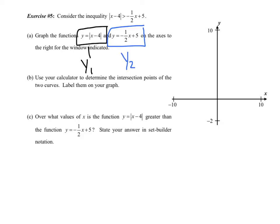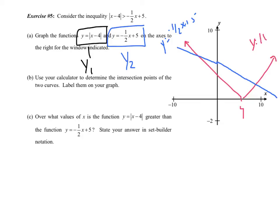For the first function, I have a V-shape for the absolute value shifted over to four. Then I have a line drawn in as well with a y-intercept of five. My blue line is y equals negative one-half x plus five, and my red line is y equals the absolute value of x minus four. Part A was to graph those two functions on the axes; part B says use your calculator to determine the intersection points.